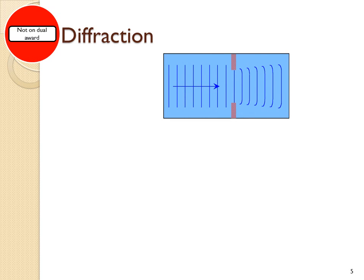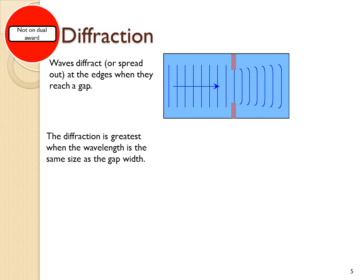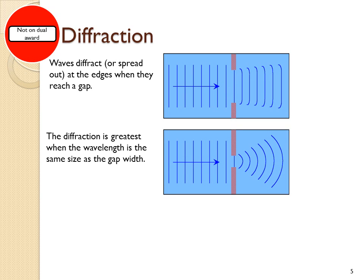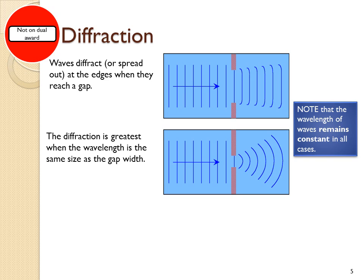When waves pass through a gap, they spread out slightly. This process is called diffraction. Diffraction is greatest when the wavelength of the wave is about the same size as the width of the gap. In this drawing, this shows about maximum diffraction. When you draw these diagrams, note that the wavelength remains constant throughout.